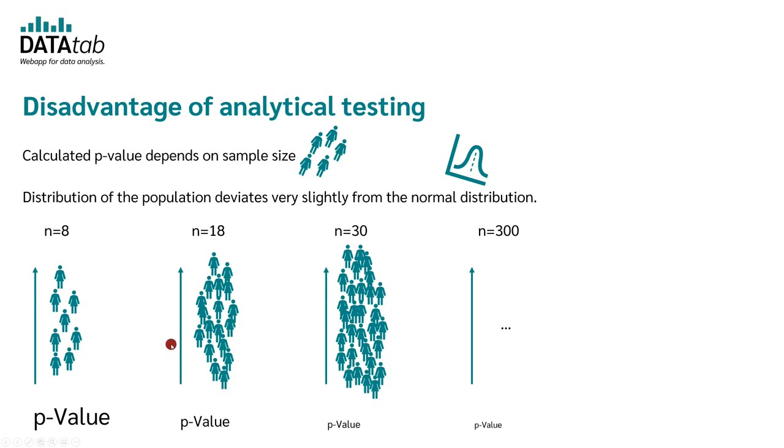However, if you take a larger sample, then a p-value becomes smaller and smaller, even though the samples come from the same population with the same distribution. Therefore, if you have a minimal deviation from the normal distribution, which isn't actually relevant, the larger your sample, the smaller the p-value becomes.